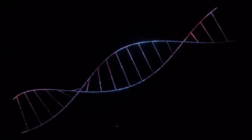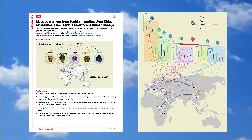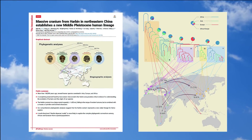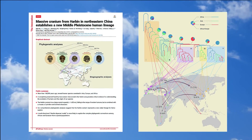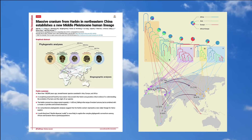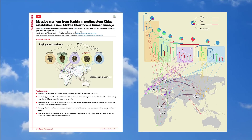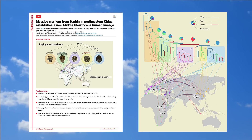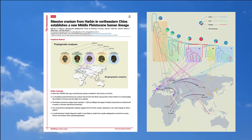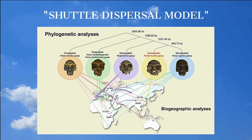Forget everything you have been taught about human evolution, because in a recent peer-reviewed paper, scientists suggest that a multidirectional shuttle dispersal model is more likely to explain the complex phylogenetic connections among ancient African and Eurasian human species and populations. In fact, there are ancient skulls from Africa that strikingly resemble a skull from China that has even been suggested to be a Denisovan.